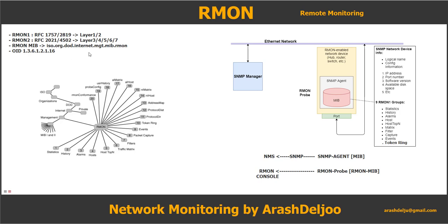In RMON 1, we have multiple collected groups of information — actually 10 groups. These are: statistics, history, alarm, host, host top-N, matrix, filter, capture, events, and token ring. Statistics provides real-time LAN statistics like utilization, collision numbers, CRC errors, and other things. For example, in statistics we have a specific count of collisions or CRC errors. Each of these groups is a collection of information.